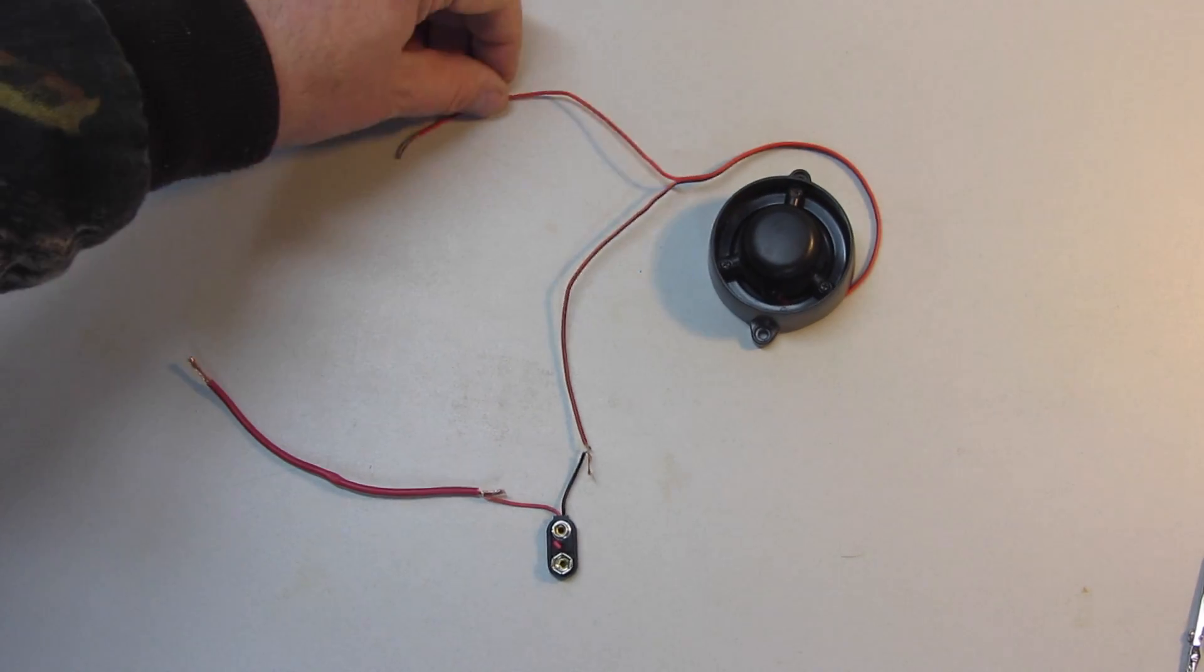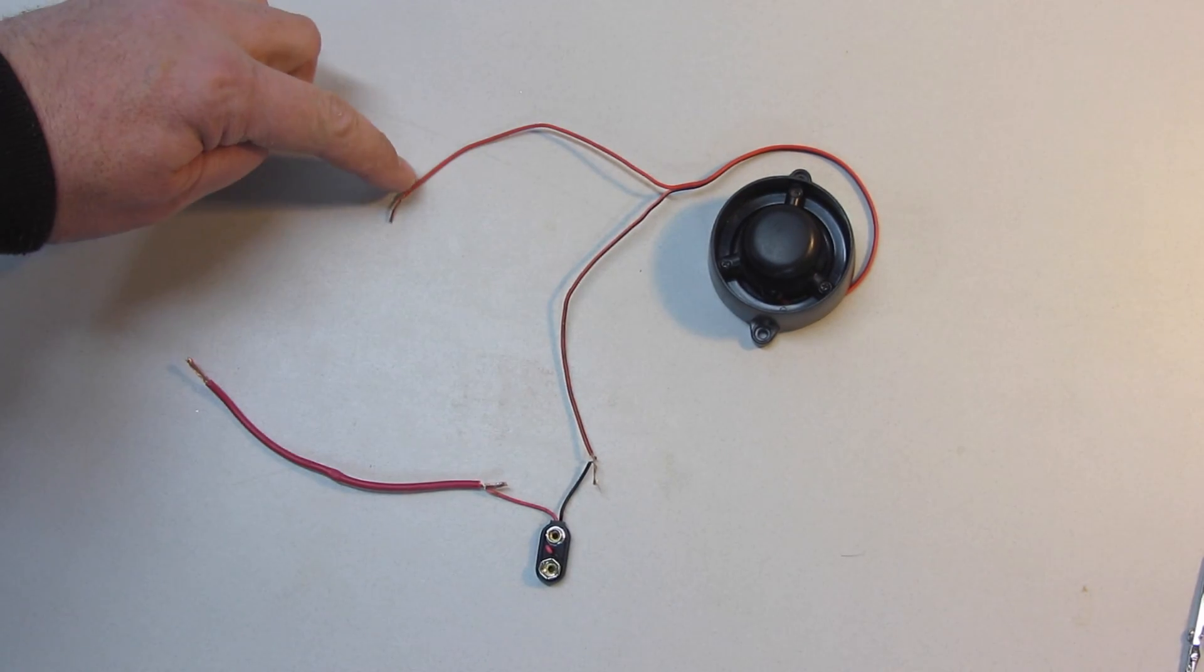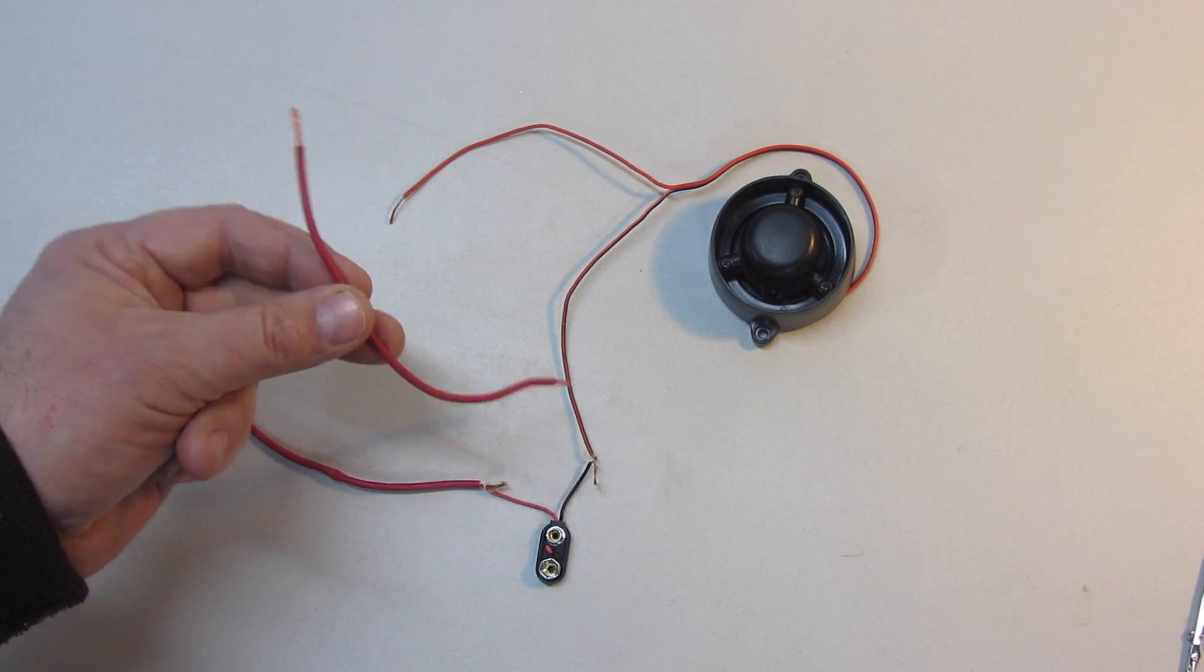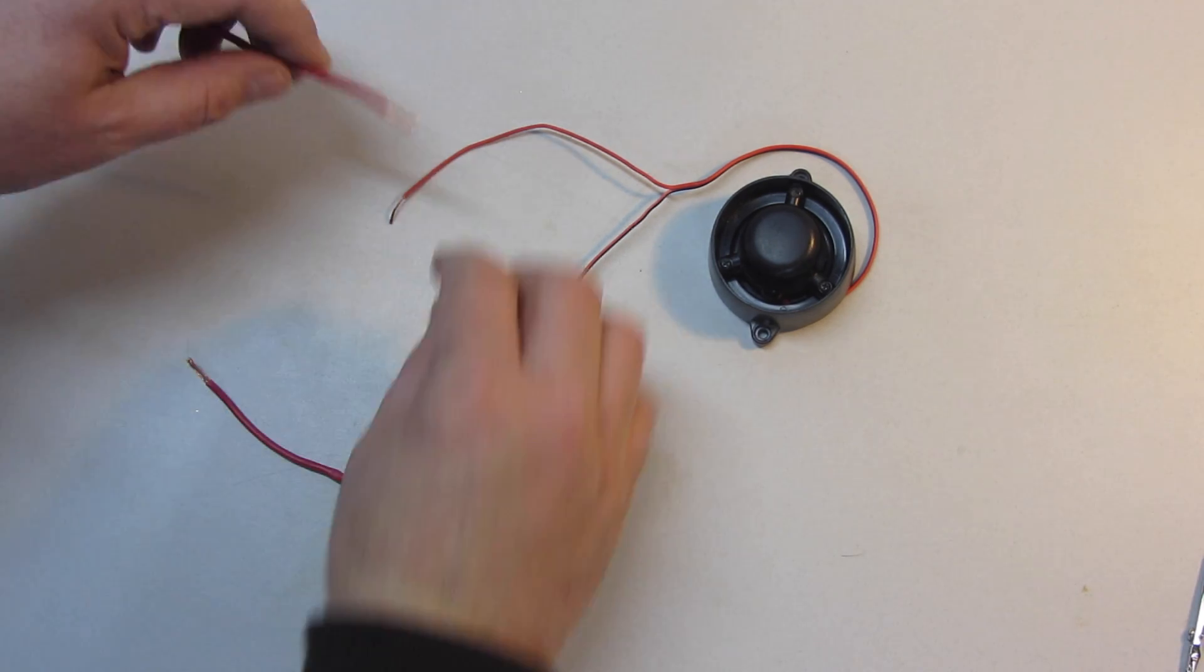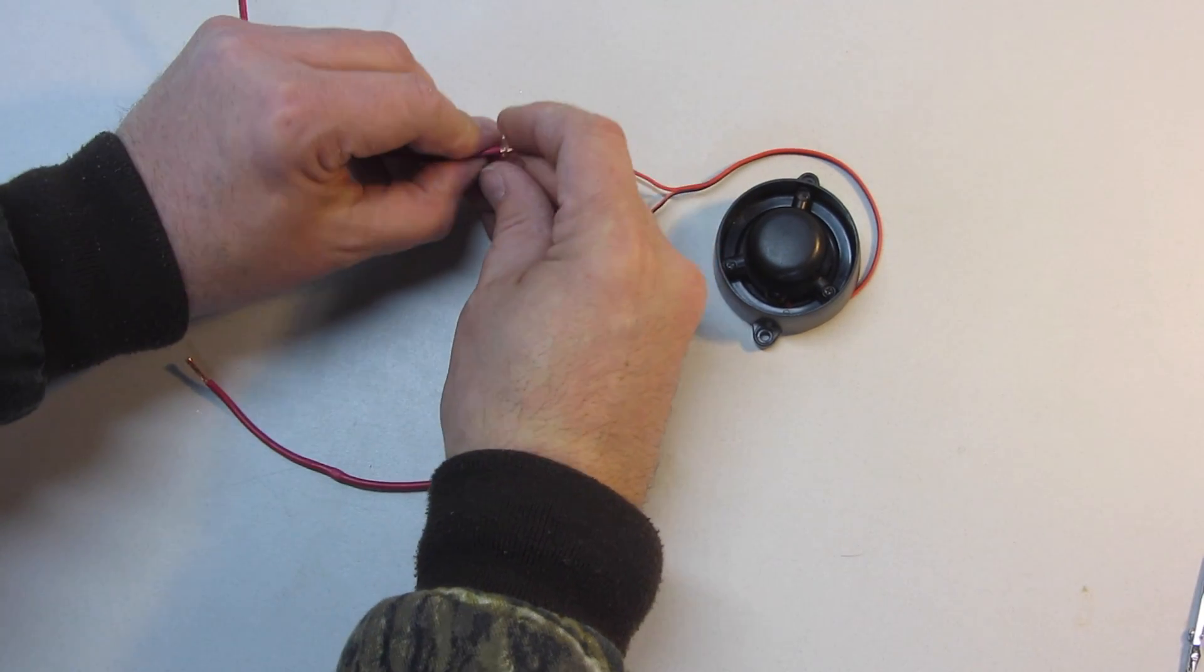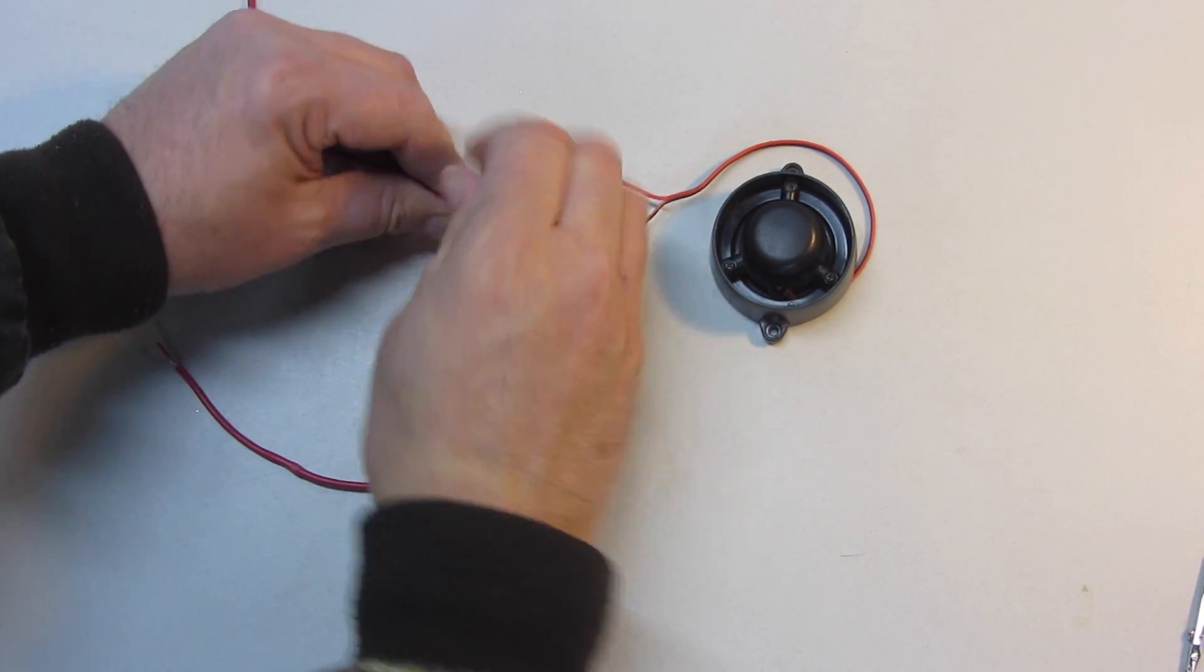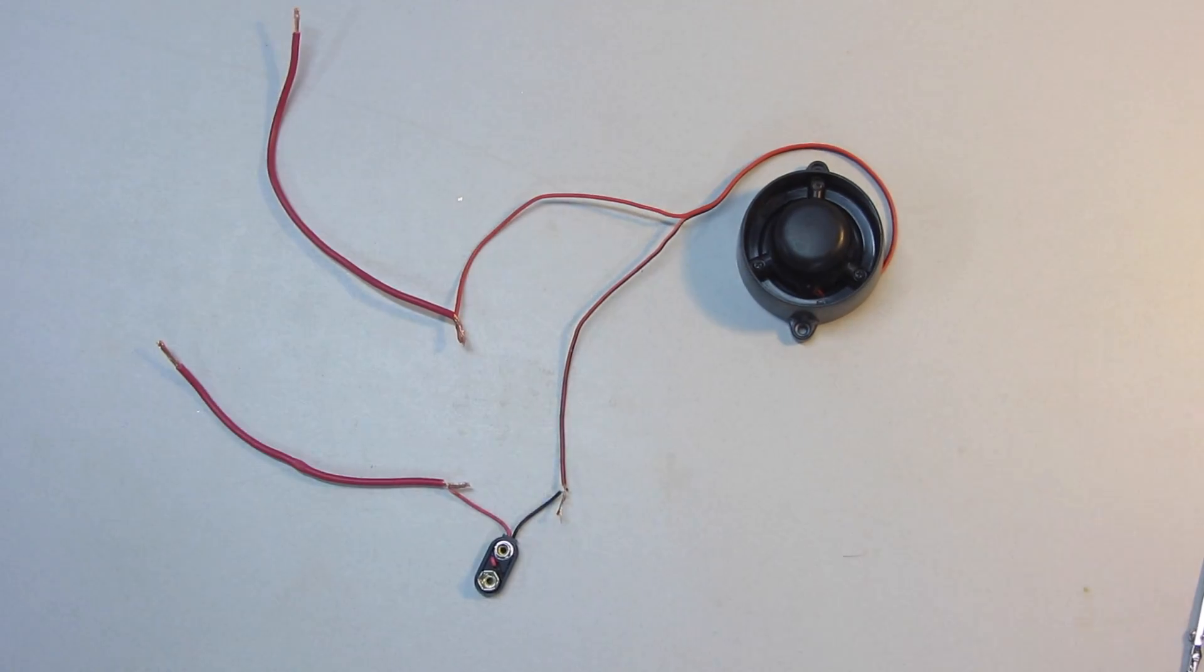And now, I will take the last wire coming off of the buzzer, and I will add some length to it by using my other wire that I've cut to about 6 inches, and twist those together. Just like that.